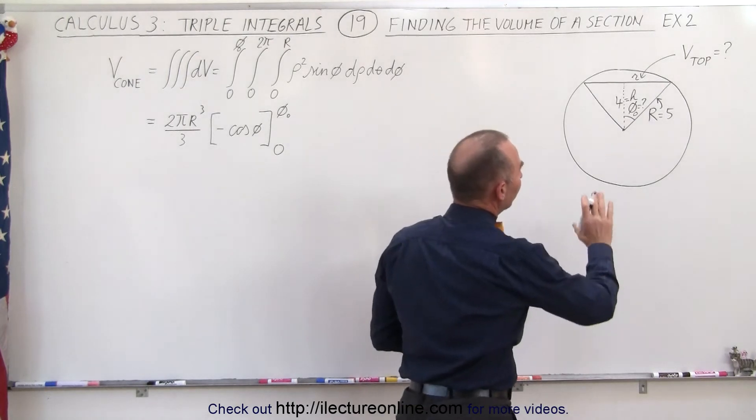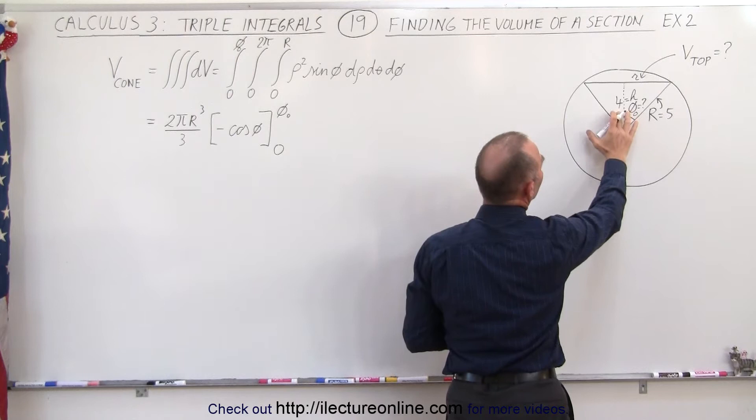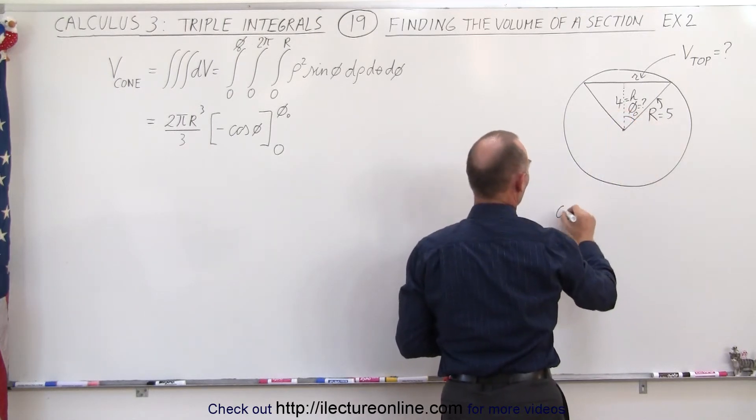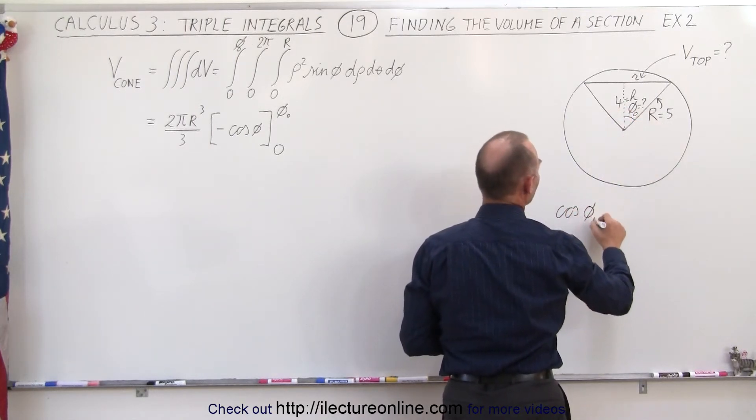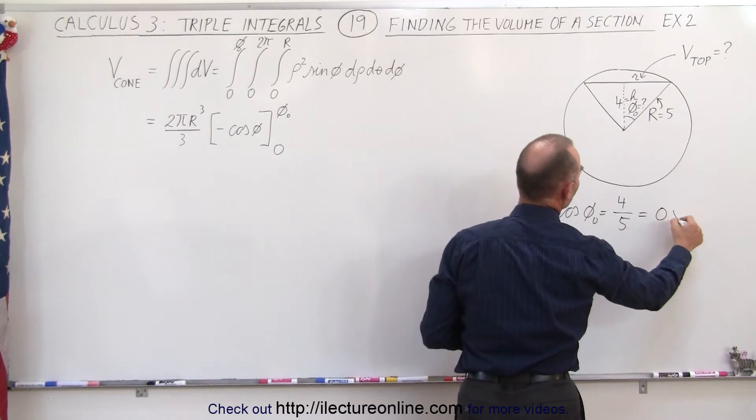So to find the value of the angle, let's see what we know. We know the adjacent side, and we know the hypotenuse. So we can say that the cosine of the angle φ is equal to the ratio of the adjacent side divided by the hypotenuse, which in this case is 0.8.